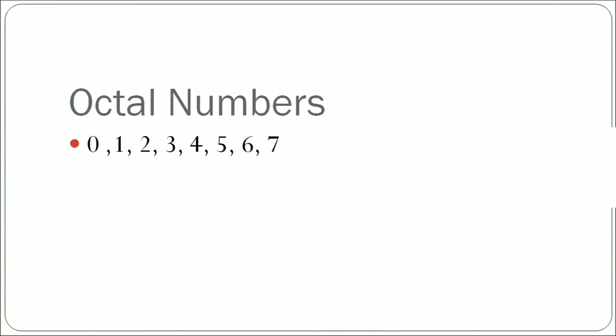For octal numbers we have the range from 0 to 7 — 0, 1, 2, 3, 4, 5, 6, 7. Octal numbers are basically the combination of 8 numbers, so the base is 8. This character set defines the range of the octal numbers and we use these numbers to form different numbers in the octal number system.